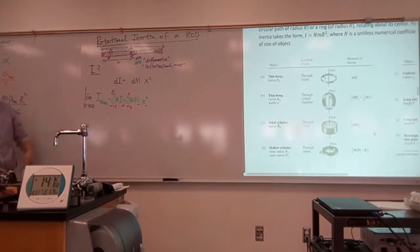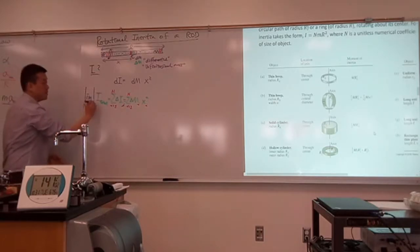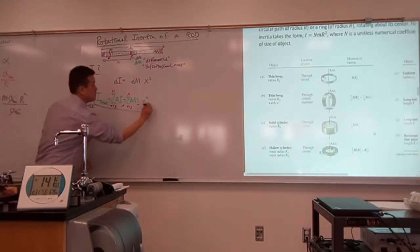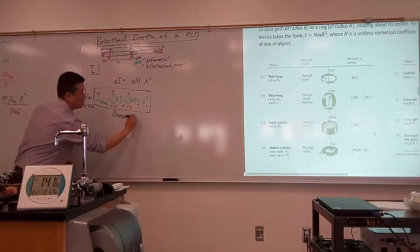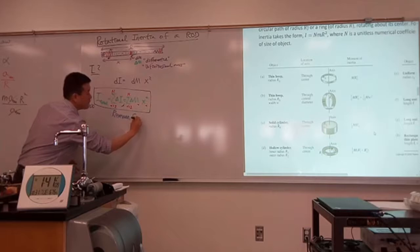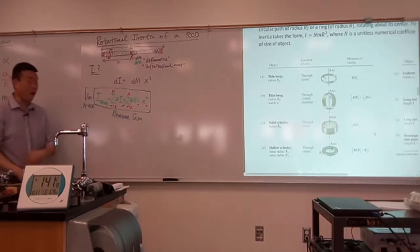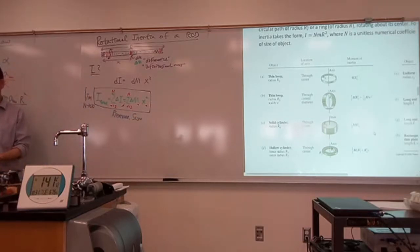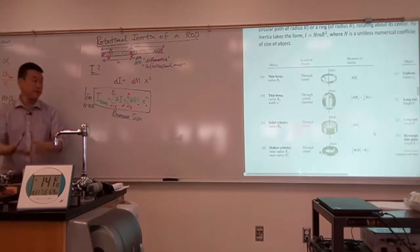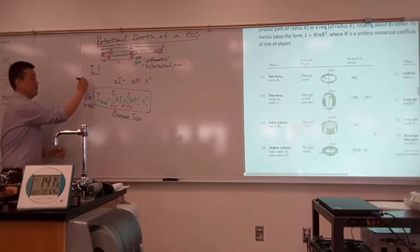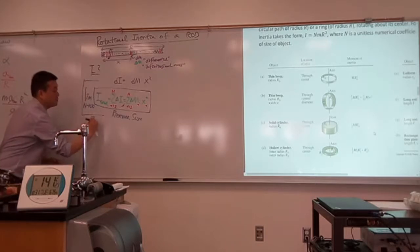You take this limit, and in your calculus class this is what you covered as Riemann's sum. Riemann's sum was the approximation to an integral. And when you take the limit that each small interval actually becomes infinitesimally small, that limit is the integral.